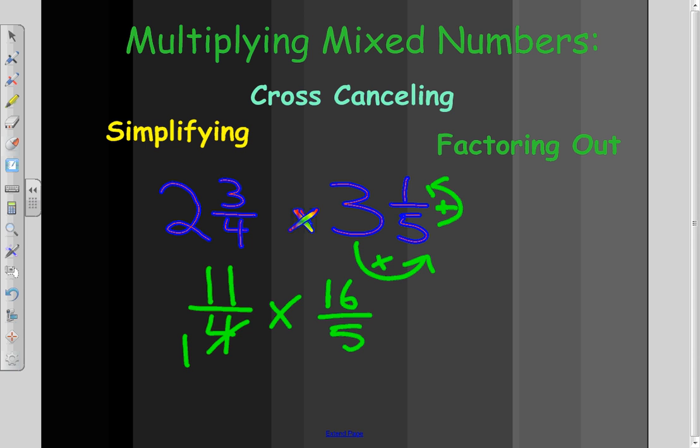and make this a 1. So, I took 4 divided by 4, and then I'm going to do the same to the top. I'm going to divide by 4, so this becomes a 4. That's how you factor, or cross-cancel, or simplify in a mixed number situation.